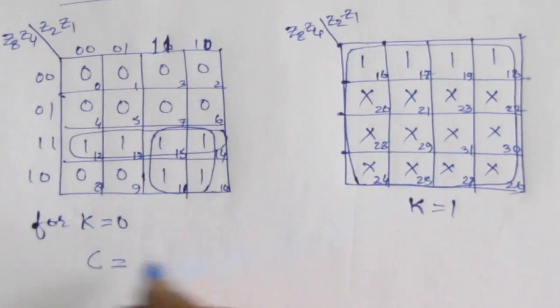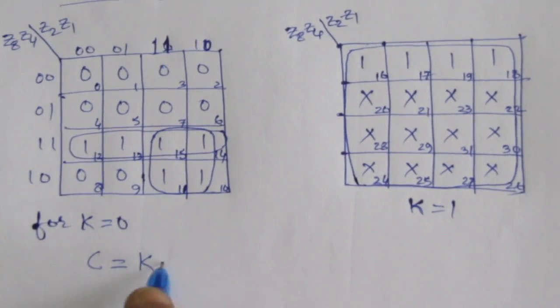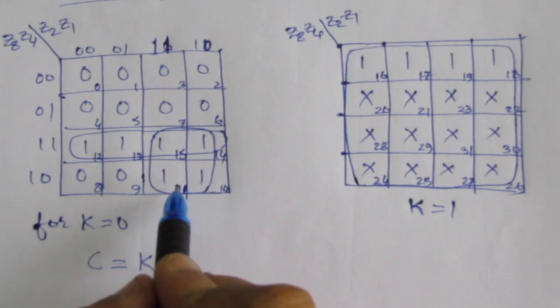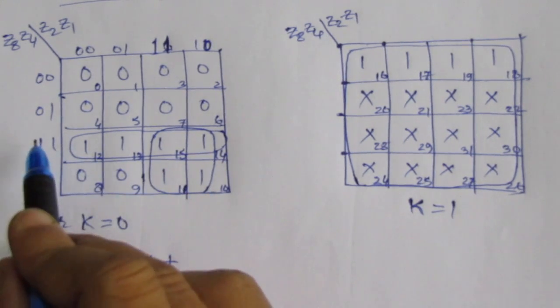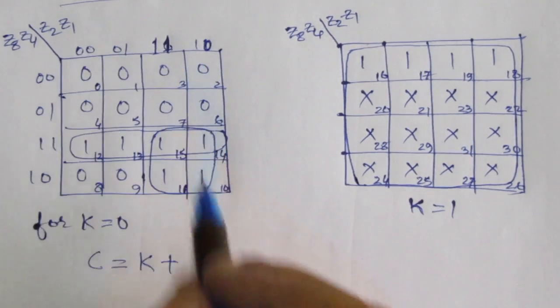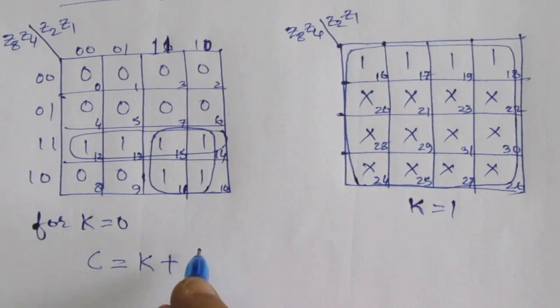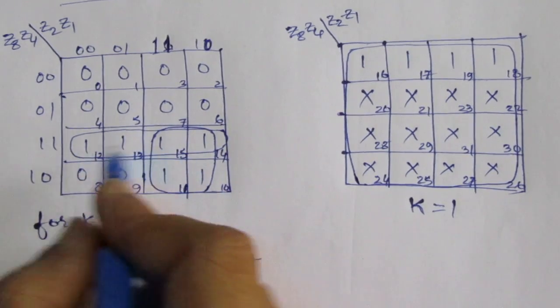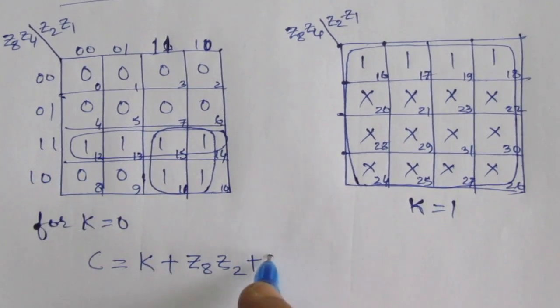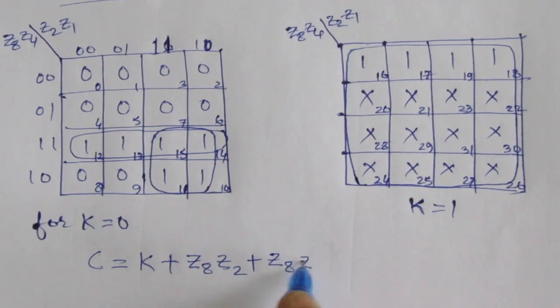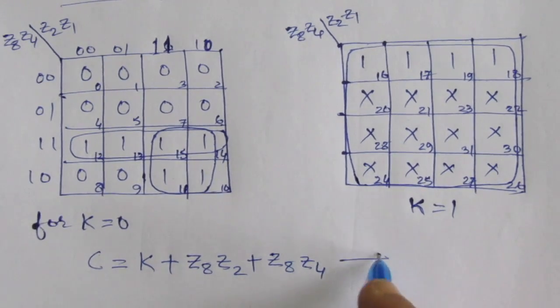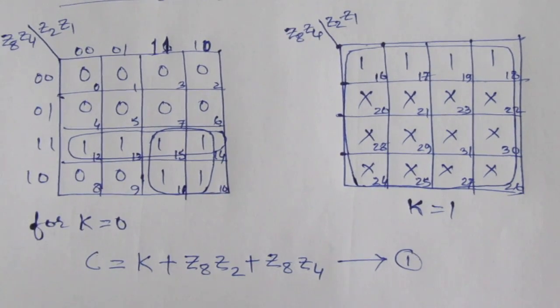C equals, from here we get, K plus z8z2 plus z8z4. So this is the expression for the carry in binary coded decimal sum.